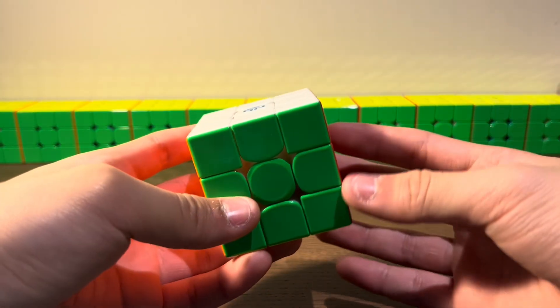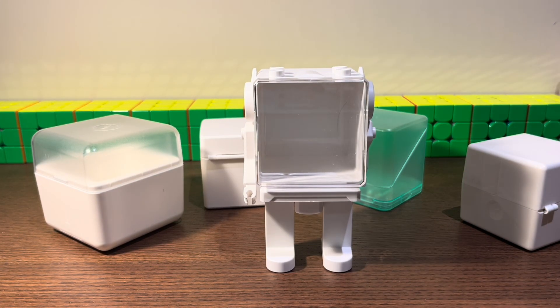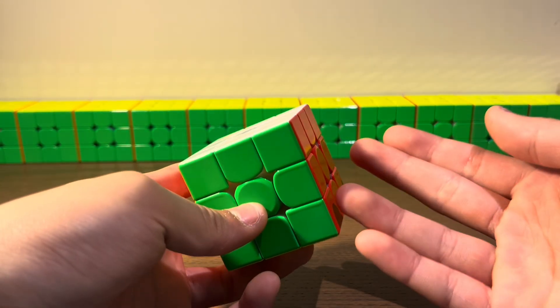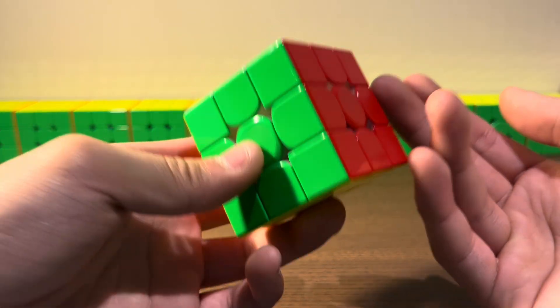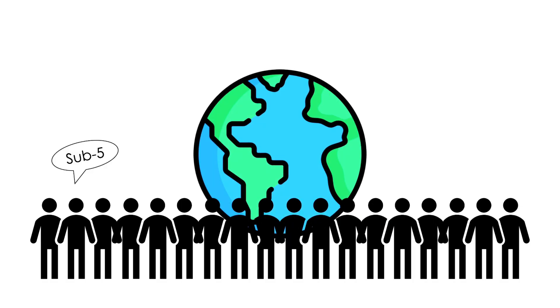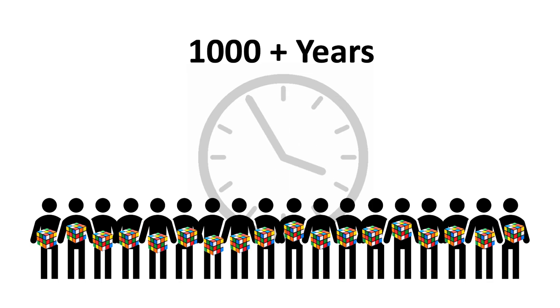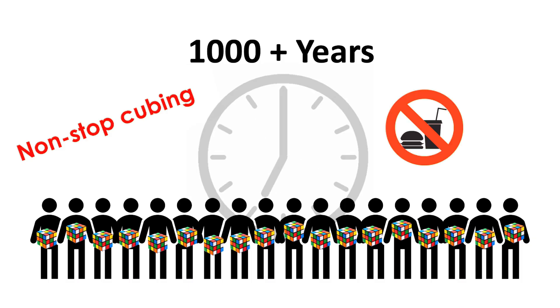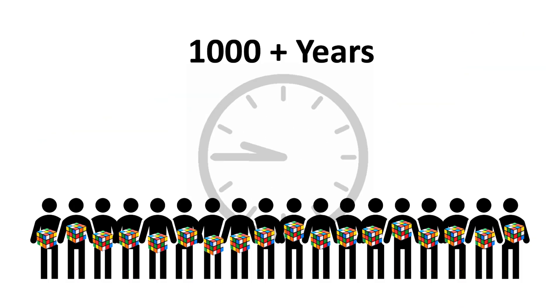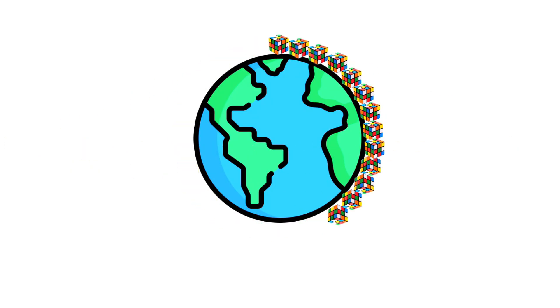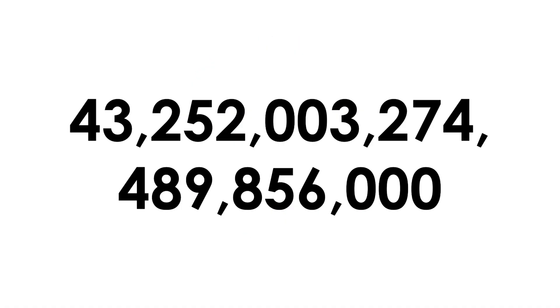This number is absolutely insane and very hard to visualize. 3-puzzles or 5-cube cases are easy to visualize, but 43 quintillion is so astronomically large it's very hard for our minds to process. Imagine if we trained the entire world to be sub-5 solvers and worked together to solve all 43 quintillion states — we'd need around 1000 years of non-stop solving with no eating and no sleeping. With 15 seconds of inspection included, we'd need more than 3000 years. And if we lined up all 43 quintillion Rubik's cubes, the length would circle the Earth 60 billion times.